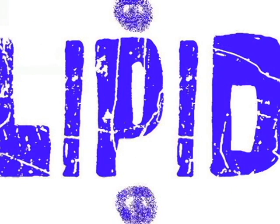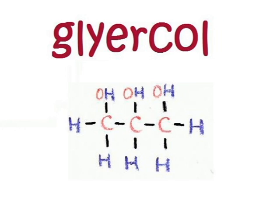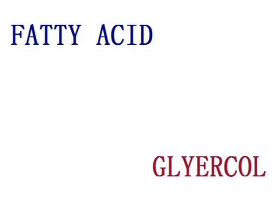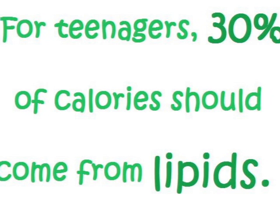Lipid. Food examples include salad dressing, peanut butter, and olive oil. Glycerol is a chemical example. Its structural representation is shown. The subunits are fatty acids and glycerol. The primary role in the human body is that it stores energy. For teenagers, 30% of calories should come from lipids.